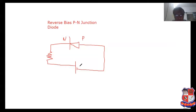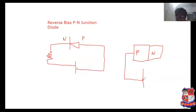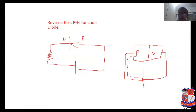Now, with reverse bias, what is the internal structure related to that? This is the P terminal and this is known as the N terminal. Now, if this is the negative terminal and this is the positive terminal, electrons can be passed through like that.